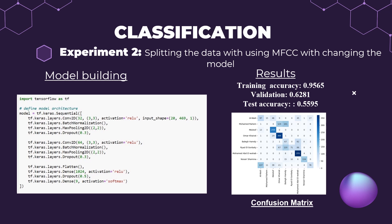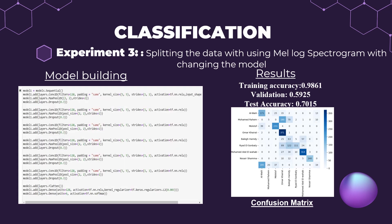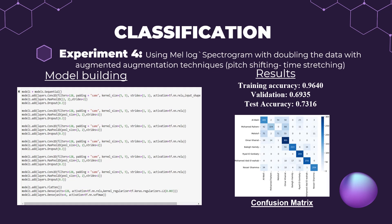For the third trial, we split the data using MFCCs for feature extraction and changed the model to a more complex one to be able to take and process more features. The test accuracy results were improved, but validation compared to training and test was not improved. Then in our fourth experiment, we used data augmentation techniques like pitch shifting and time stretching.